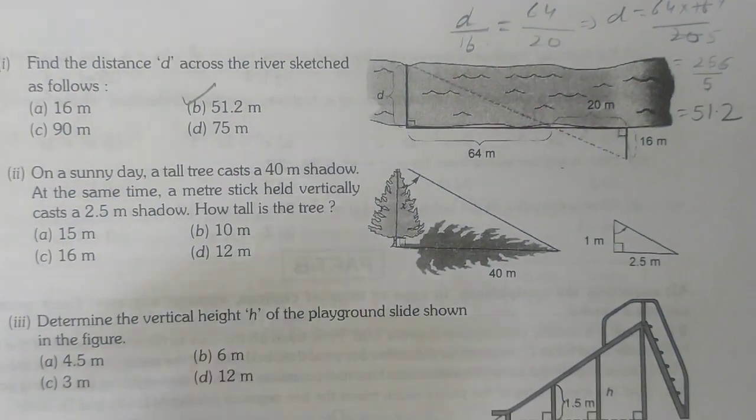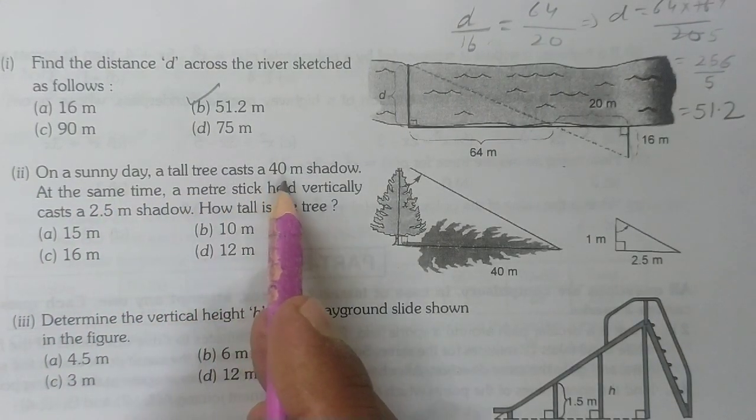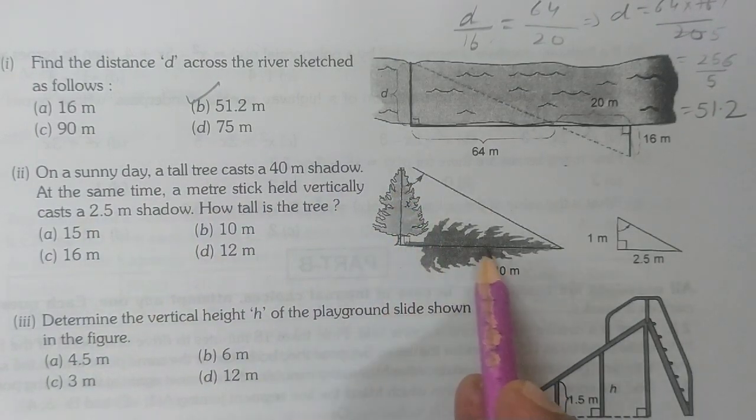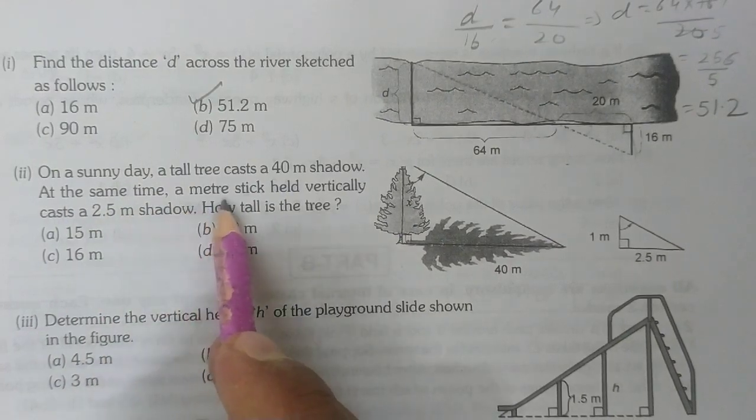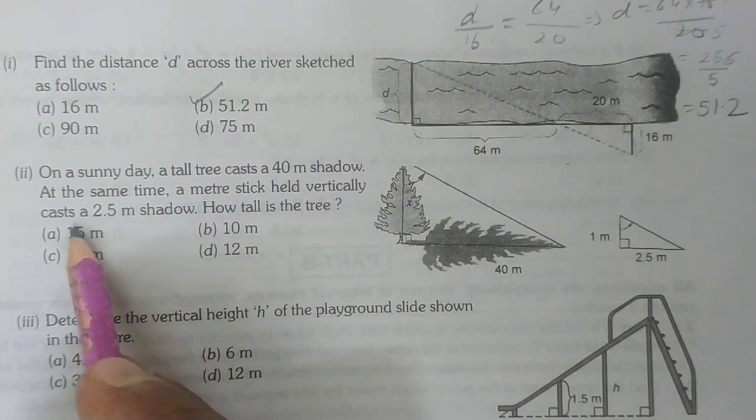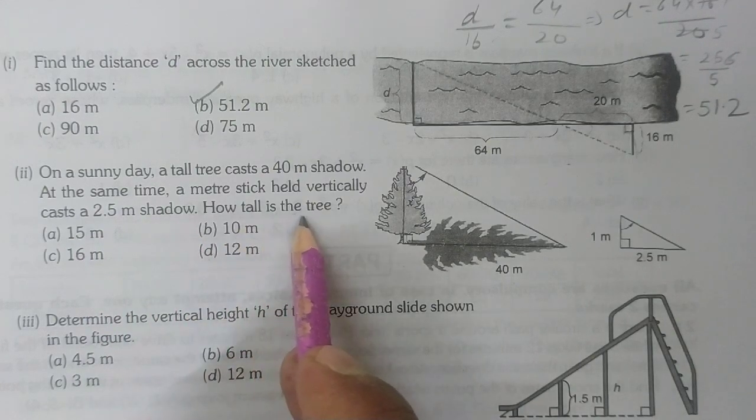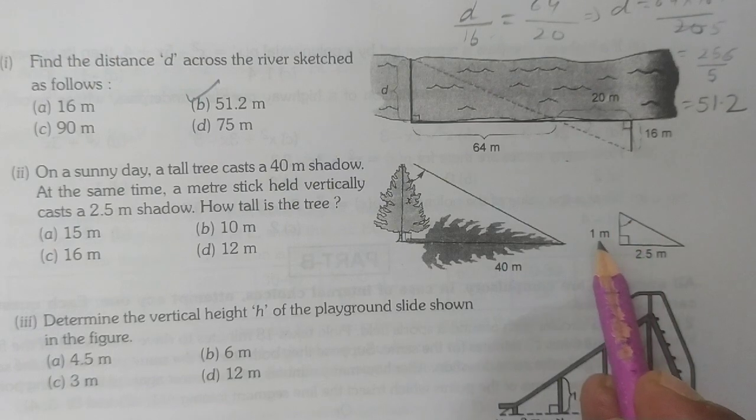Second question: On a sunny day, a tall tree casts a 40 meter shadow. At the same time, a meter stick held vertically casts a 2.5 meter shadow. How tall is the tree? Here 2.5 meter is the shadow and its height is 1 meter.